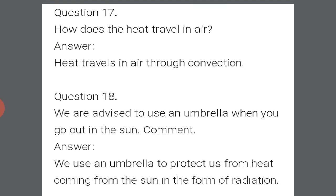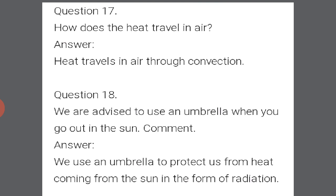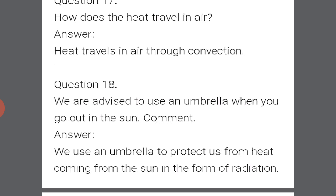How does heat travel in air? Heat travels in air through the method of convection. We studied three modes of heat transfer: conduction, convection, and radiation. We are advised to use an umbrella when we go out in the sun. We use an umbrella to protect ourselves from the heat coming from the sun in the form of radiation. The umbrella acts as a barrier between us and the sun's radiation, protecting us from harmful heat radiations.